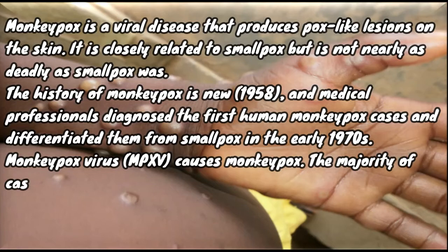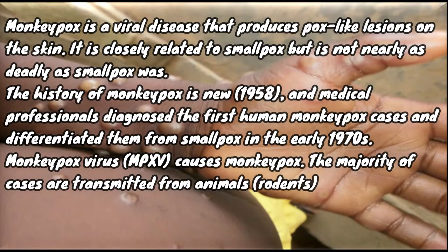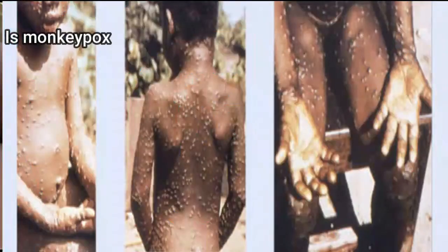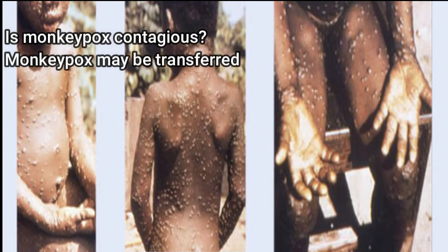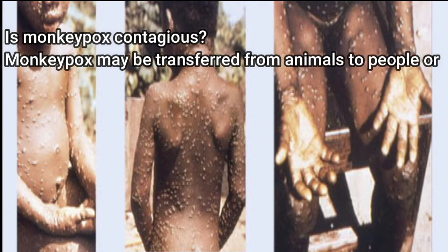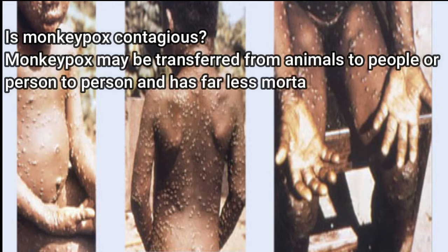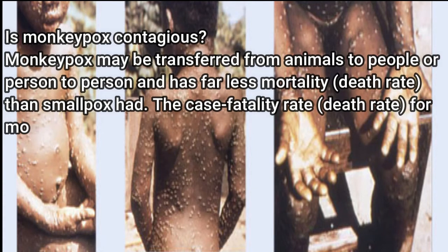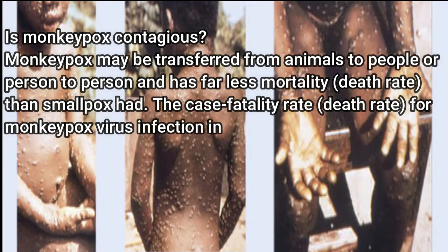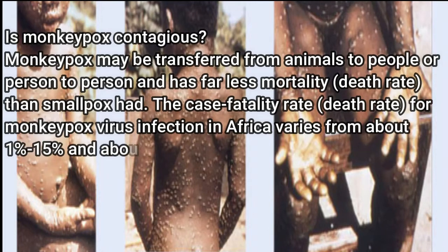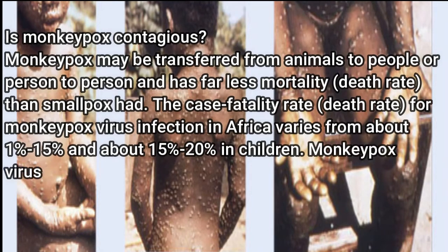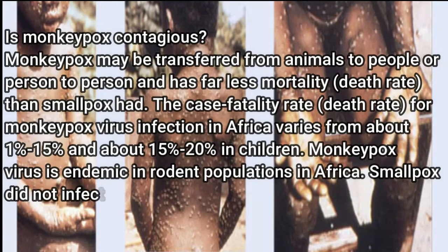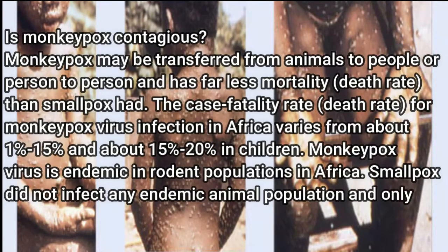Monkeypox virus (MPXV) causes monkeypox. The majority of cases are transmitted from animals — mainly rodents — to humans by direct contact. Monkeypox may be transferred from animals to people or person to person, and has far less mortality than smallpox. The case fatality rate for monkeypox virus infection in Africa varies from about 1–15%, and about 15–20% in children.